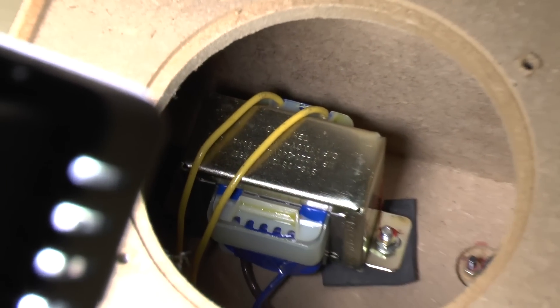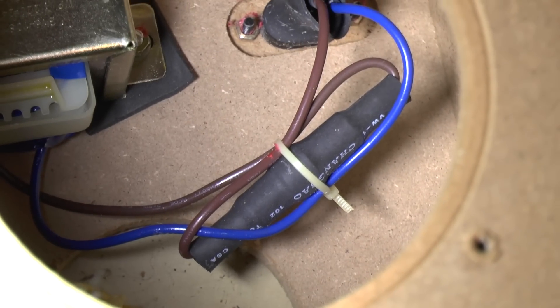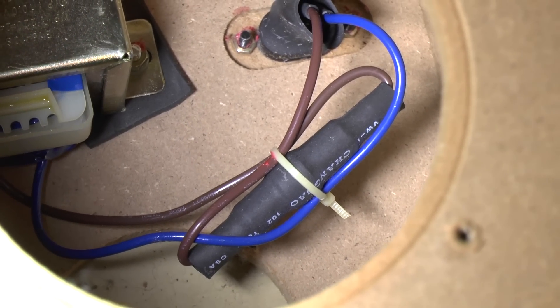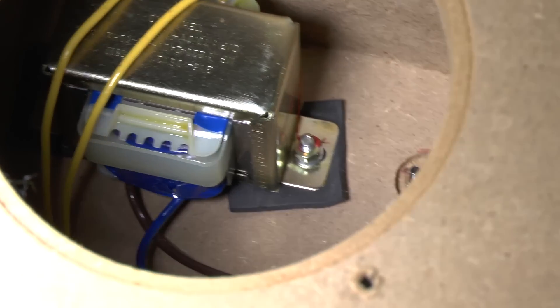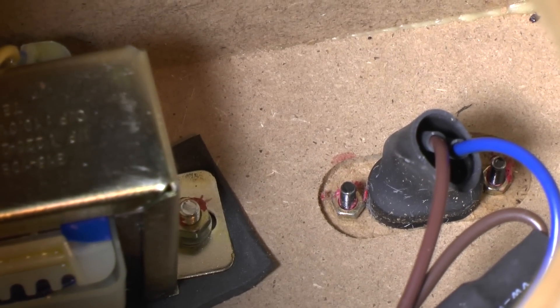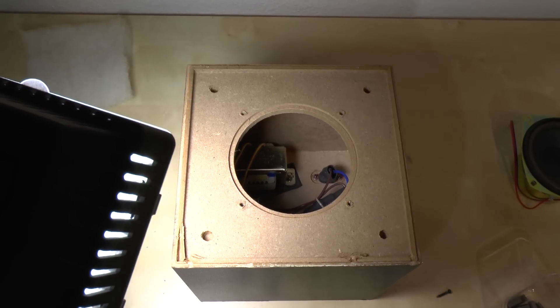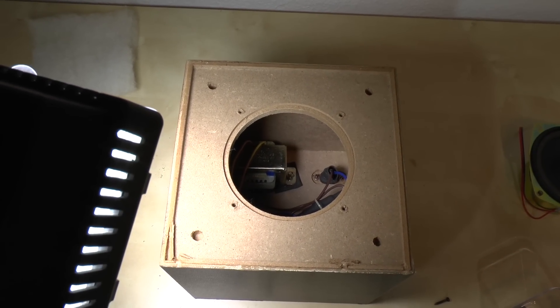As you can see we got the transformer right there. We got the power input right there and then that I assume is a fuse in there. And that's all there is in there. And unfortunately I can't really get these nuts out because they are all glued in place and I can't reach them with my tools. So I guess that thing is just going to go into the trash.